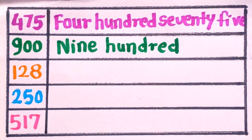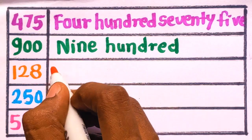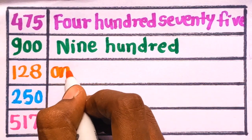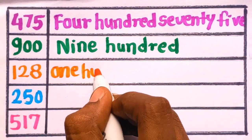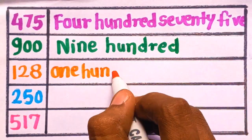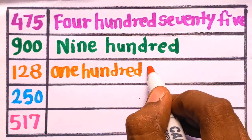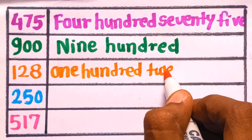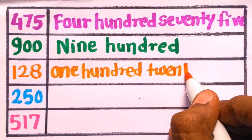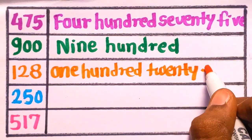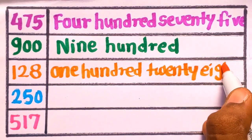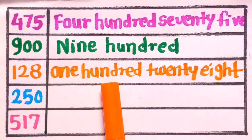Next is 128. One hundred, O-N-E, H-U-N-D-R-E-D, twenty, T-W-E-N-T-Y, E-I-G-H-T. 128.